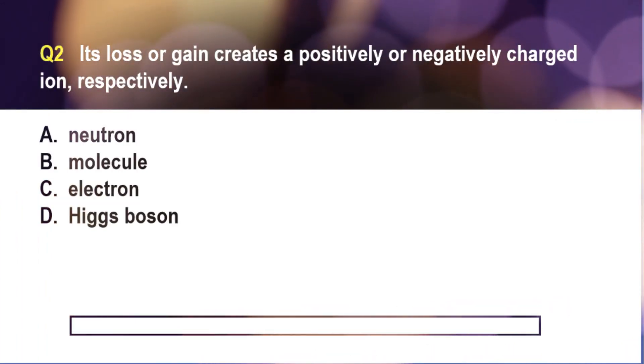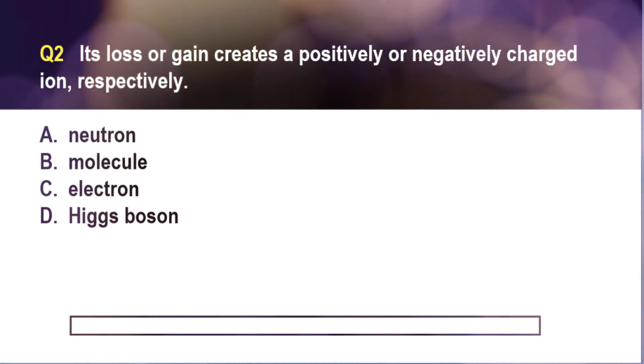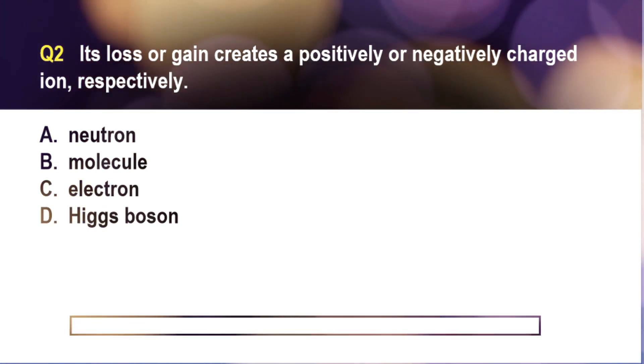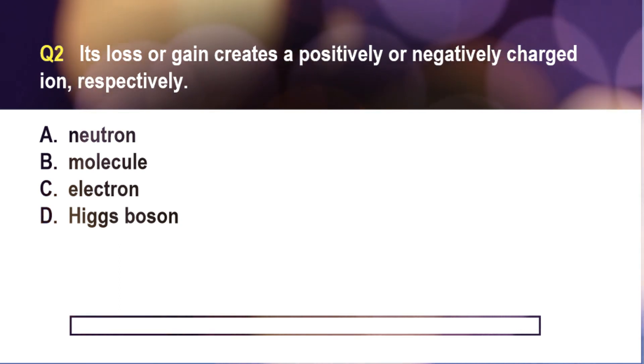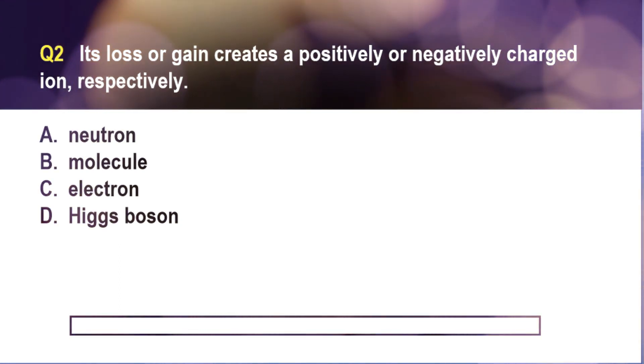Question number two. Its loss or gain creates a positively or negatively charged ion, respectively. A. Neutron, B. Molecule, C. Electron, D. Higgs boson.